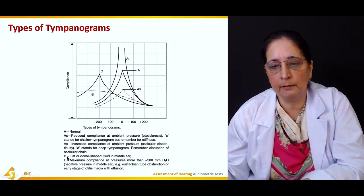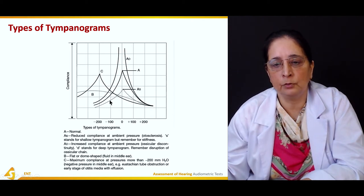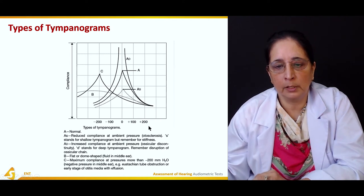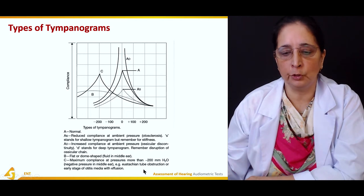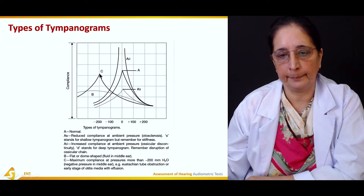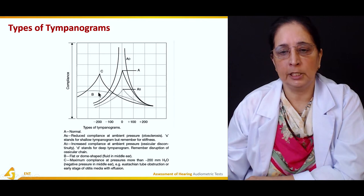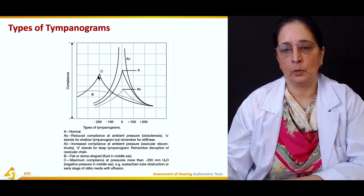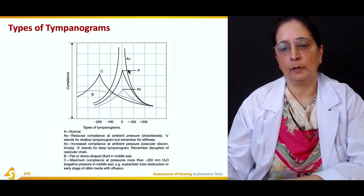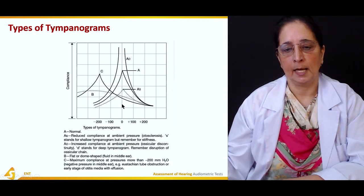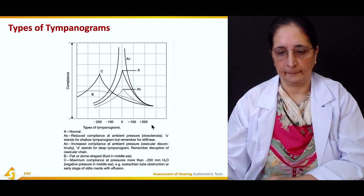Type B is a flat or dome-shaped tympanogram, mainly due to fluid in the middle ear. Type C shows maximum compliance at a negative pressure greater than minus 200 millimeters of water, mainly due to Eustachian tube obstruction.